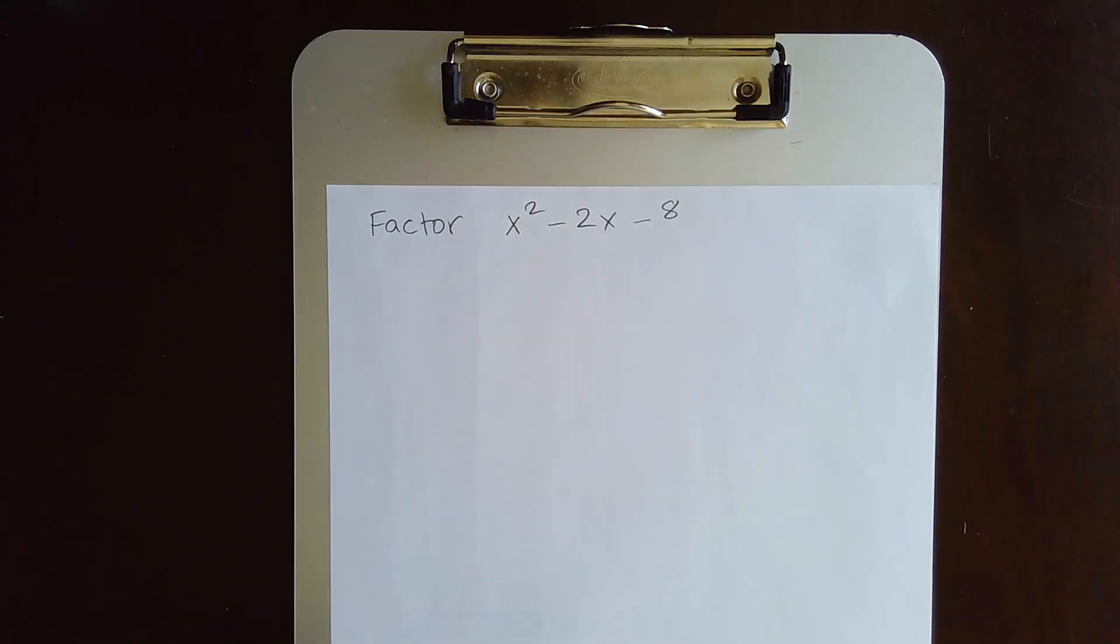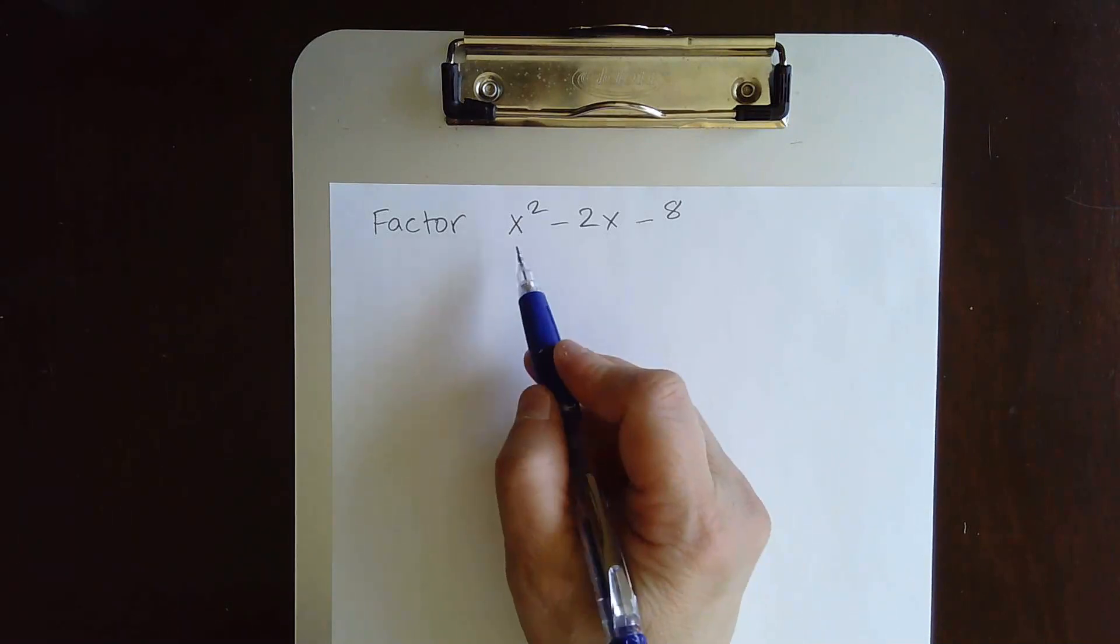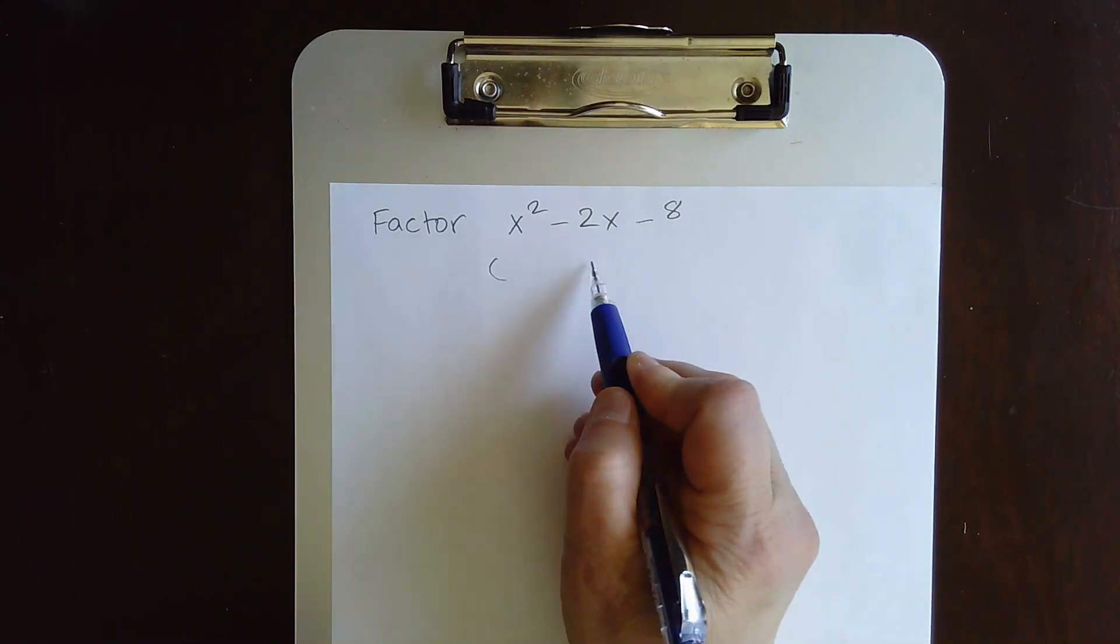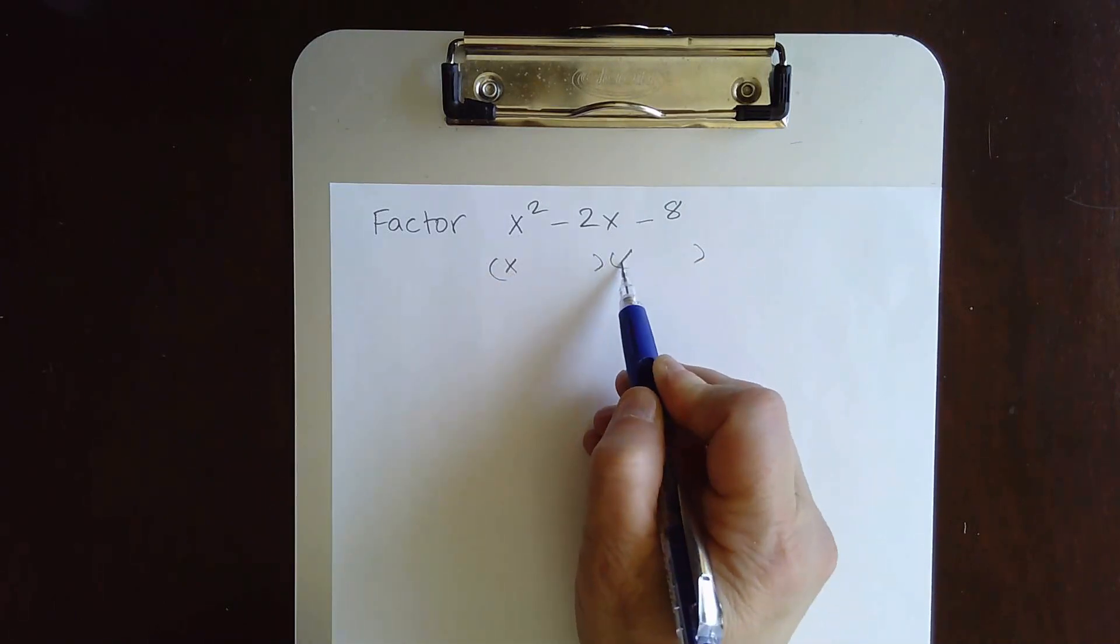Hello everybody. Today we're going to factor the trinomial x squared minus 2x minus 8. So we have x squared here. That means we're going to have to have x here and x here.